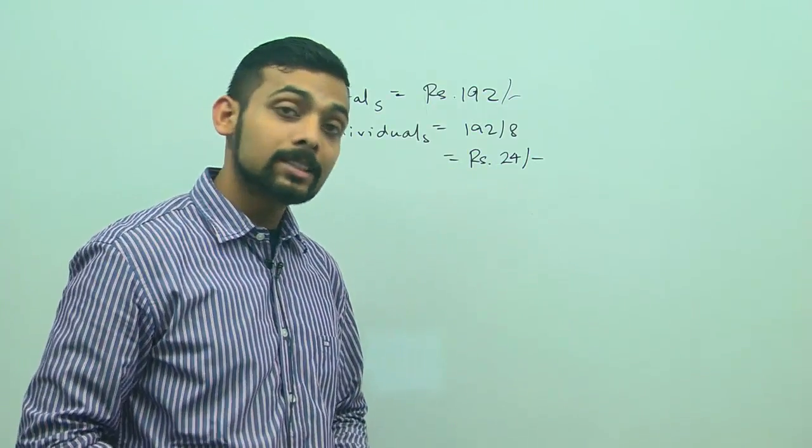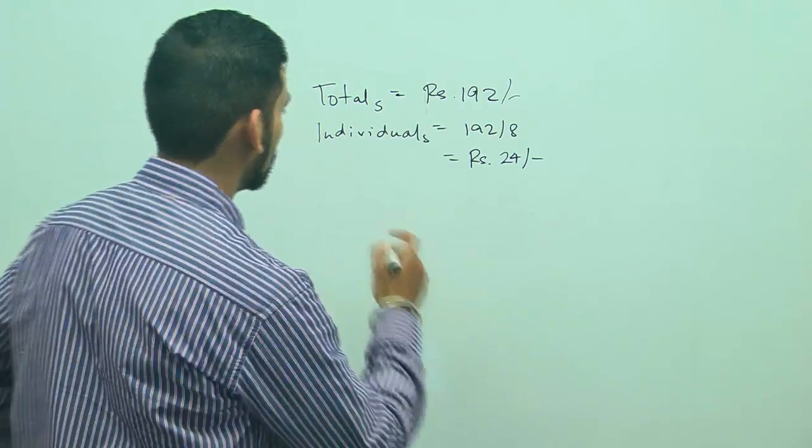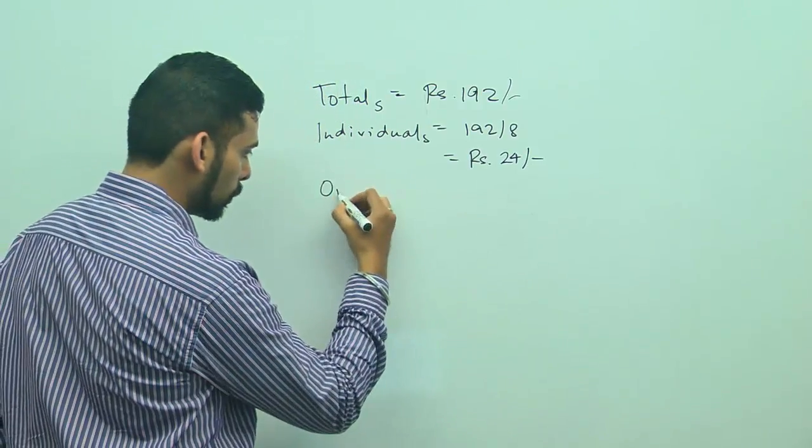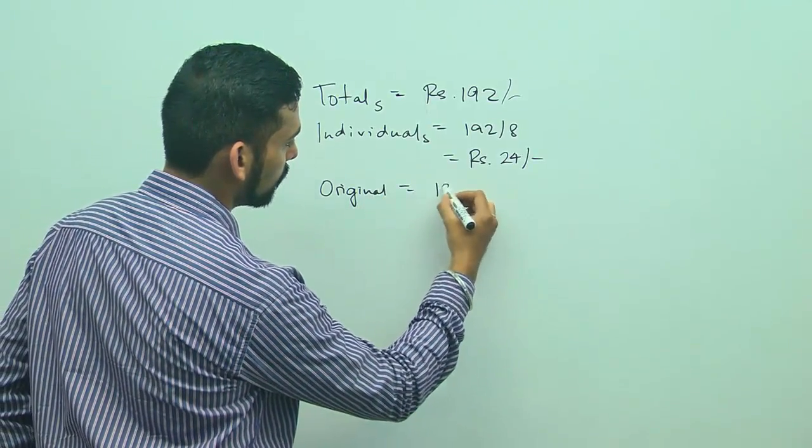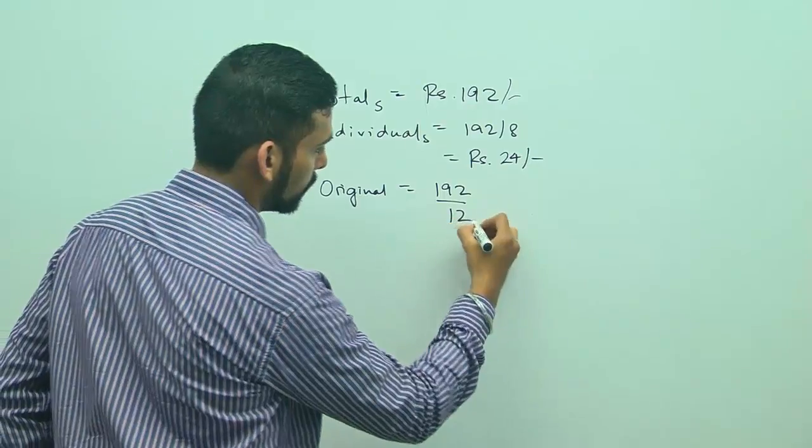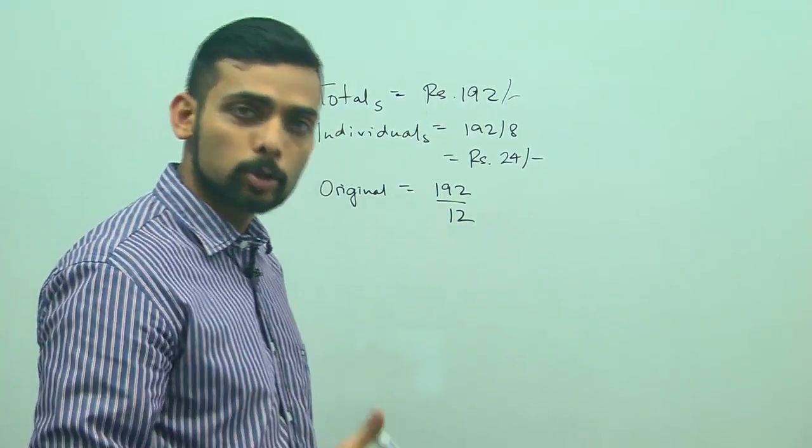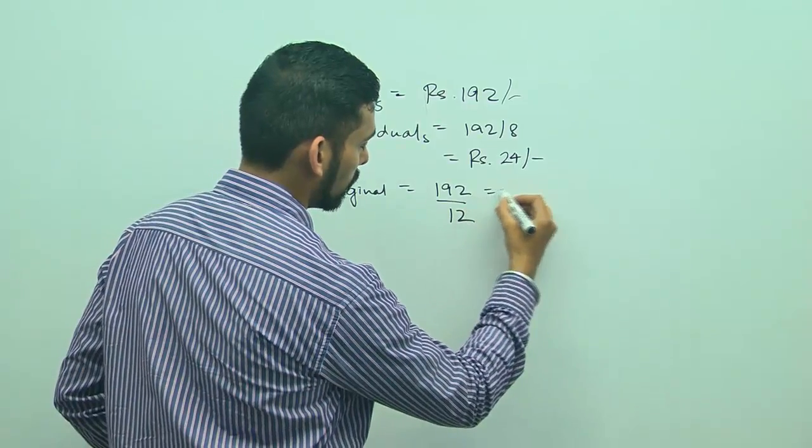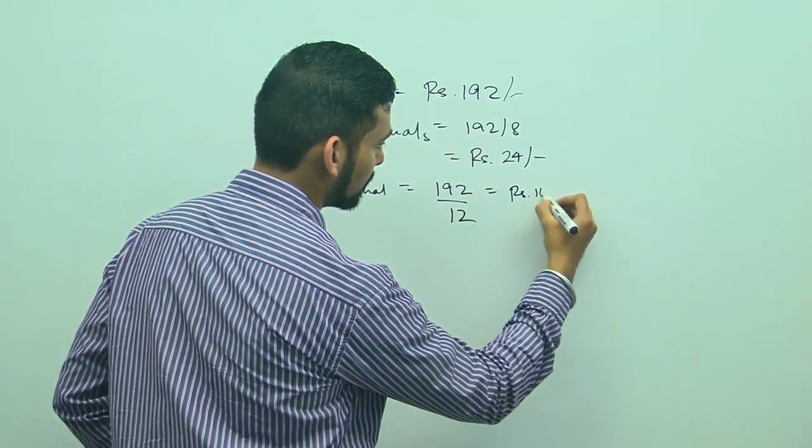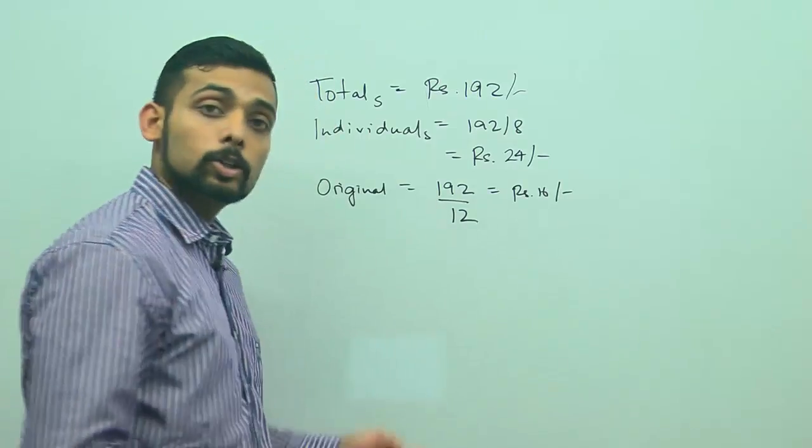And 4 people have dropped out, so that means the original number of people must have been 12. So let me find out the original spend - that will be 192 divided by 12, the number of people who were supposed to go for the movie. So if I divide 192 by 12, I get rupees 16.